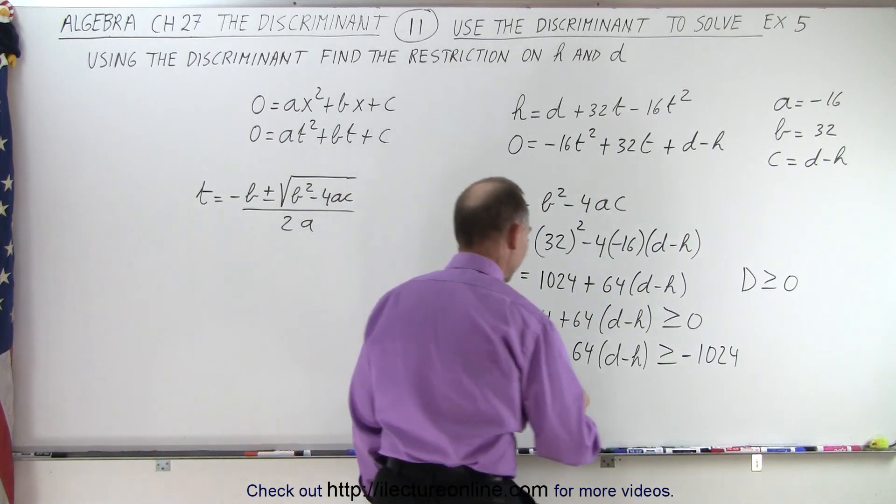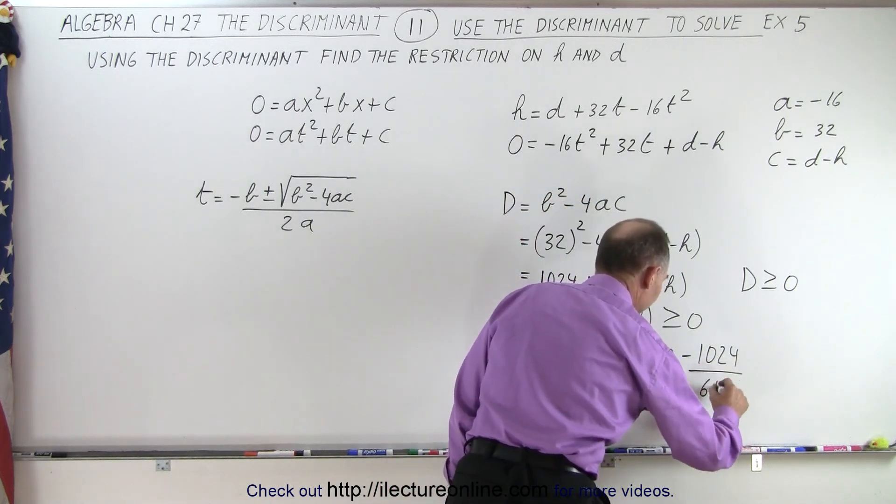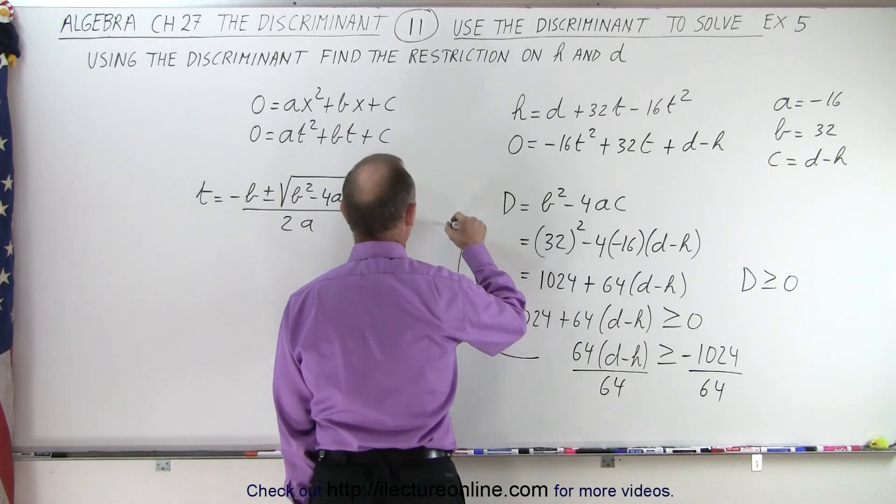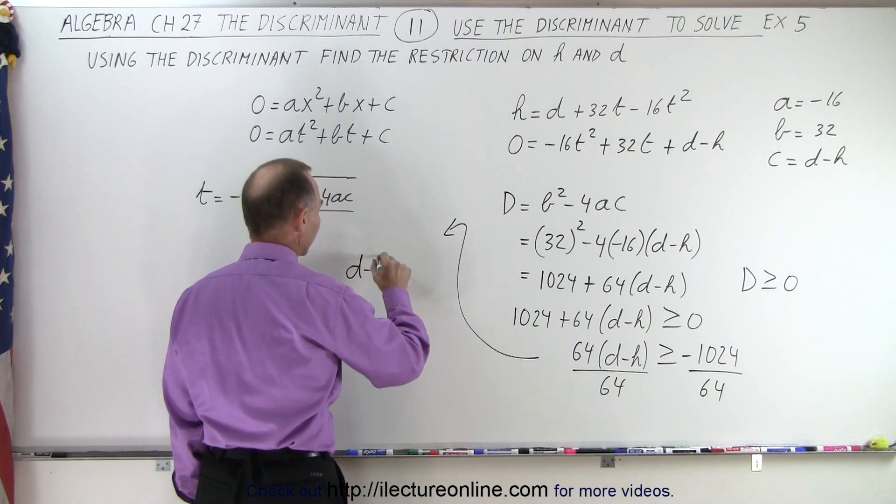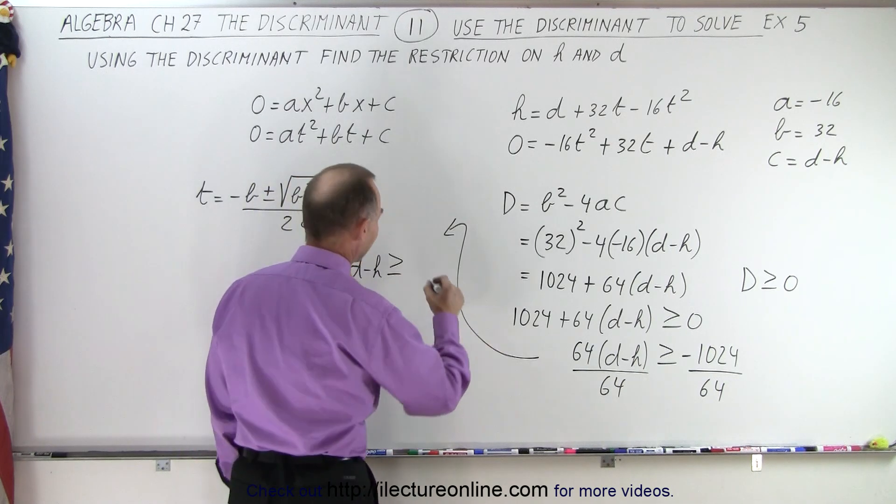Dividing both sides by 64. So divide this by 64, divide that by 64. And then moving over here, we can say that d minus h must be greater than or equal to negative 16.